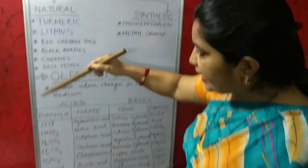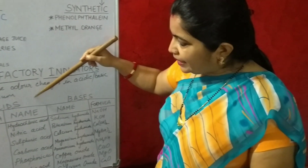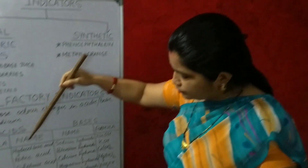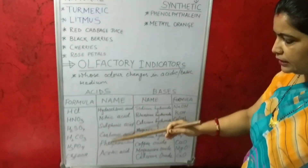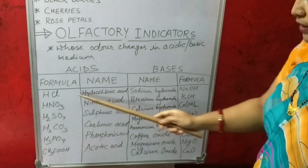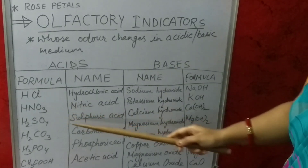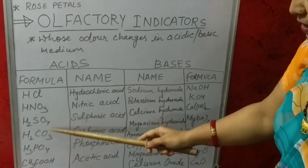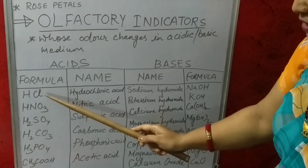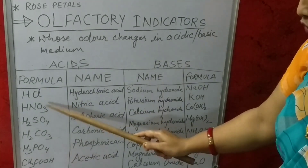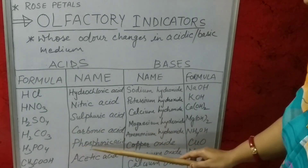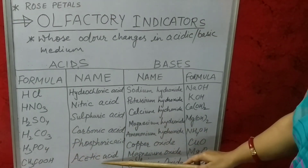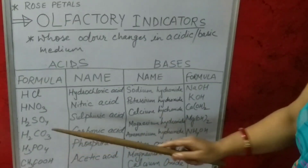Now we can add the part of indicators in this video. Apart from this, there are certain formulas of acids and bases written here. Some of the formulas are: hydrochloric acid — HCl, nitric acid — HNO3, sulphuric acid — H2SO4, carbonic acid — H2CO3, phosphoric acid — H3PO4, and acetic acid — CH3COOH.